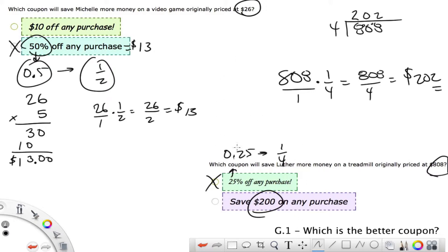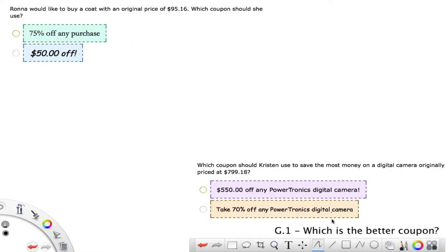Let's look at a couple more examples. So now we have this $95.16, which is pretty close to $100. So let's assume that's $100, and I want to take 75%. 75% of 100 better be $75. So I already know this one is clearly the winner. But let's double check for sure.